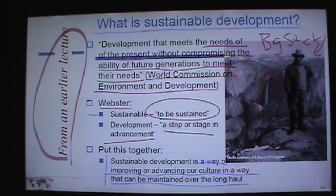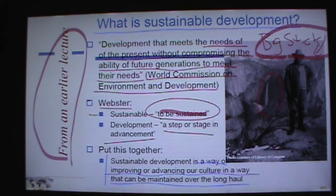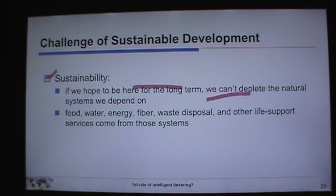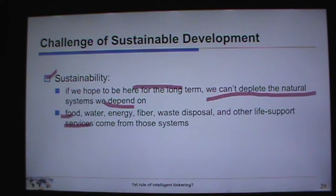What is sustainable development? Development that meets the needs of the present without compromising future generations' ability to meet their needs. Sustainable development is how we improve or advance our culture. Challenges include the economics, our failure to plan long-term, and the fact that we cannot deplete the natural systems — food, water, energy, fiber, waste disposal — that we depend upon. We need to protect and sustain those systems because we can't rebuild them.